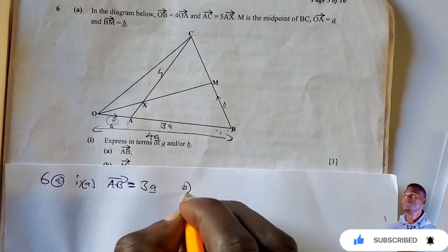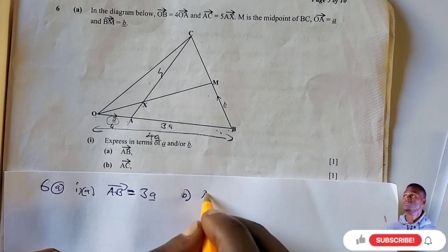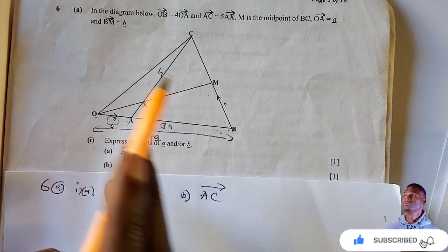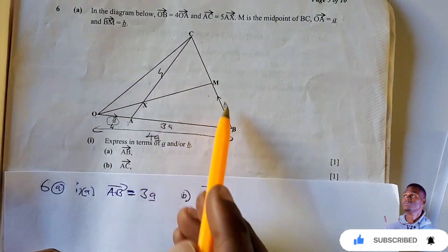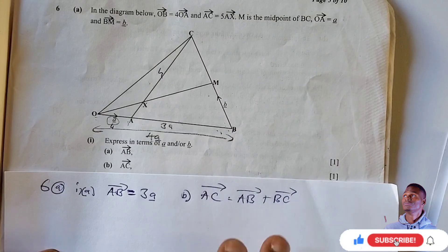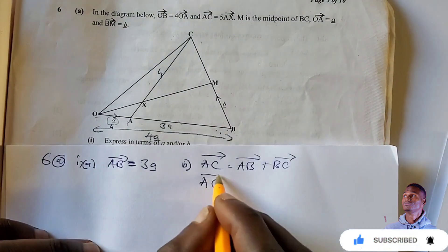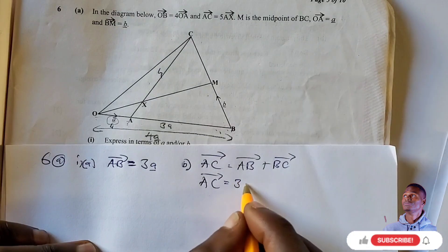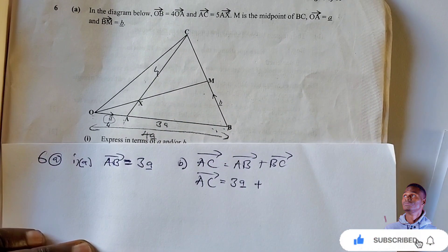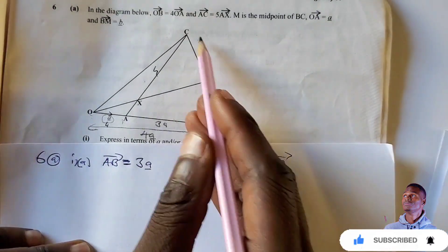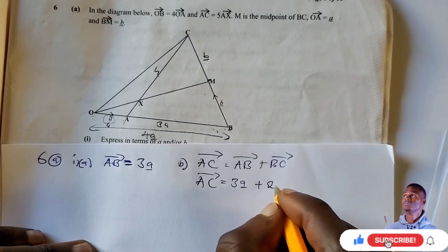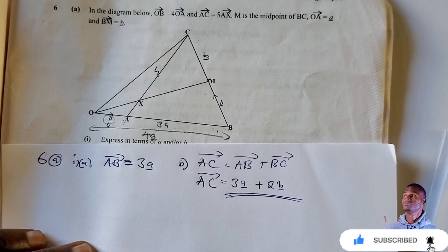Now for part B, we are asked to find AC. AC equals AB plus BC. AB is three vector A. BC: since M is the midpoint of BC and BM is vector B, then BC equals two vector B. So AC equals three vector A plus two vector B. That's the answer — we can't simplify further.